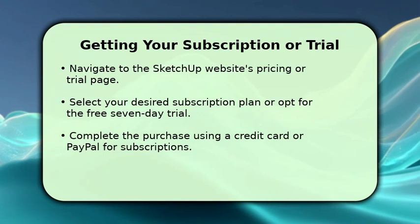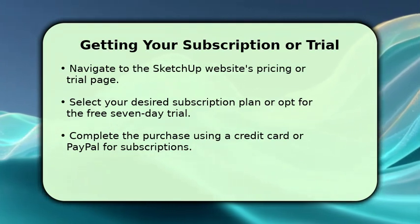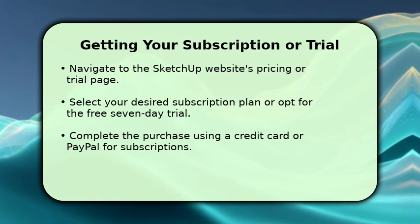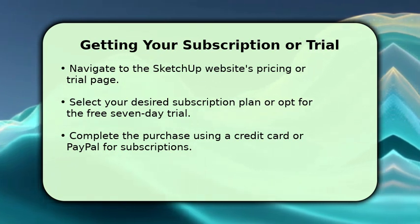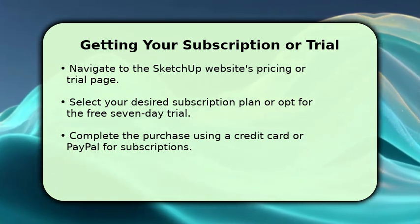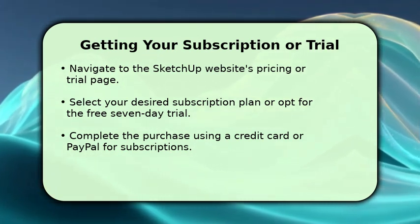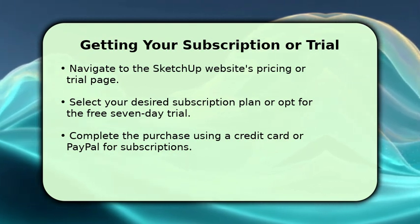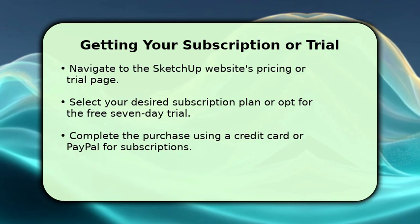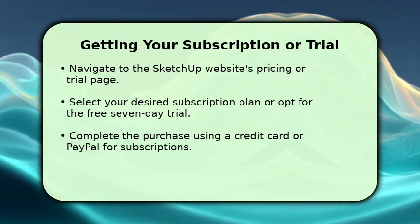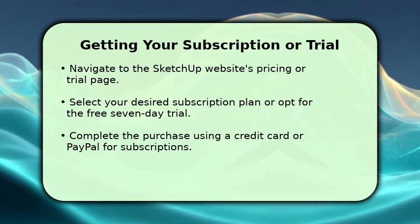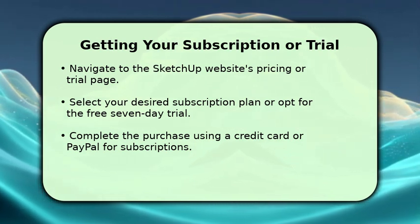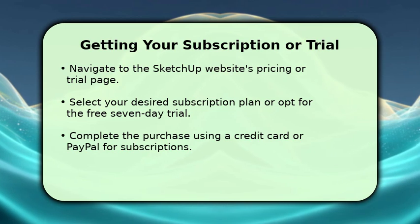Once your Trimble ID is ready, you can proceed to obtain your license. Head to the SketchUp website's pricing page to compare the Go, Pro, and Studio subscription options. Alternatively, you can choose to start your free 7-day trial. For paid subscriptions, you will complete the purchase using a major credit card or PayPal. After your selection, you will receive an email containing all necessary access details and instructions.